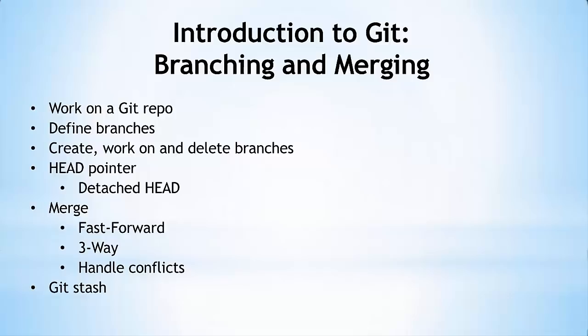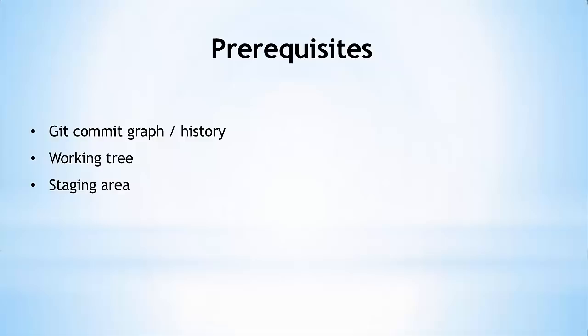Hello, I'm David Mahler and this is an introduction to Git branching and merging. In this video we will set up a new Git repo, define Git branches, create, work on and delete branches, understand the purpose of the head pointer and the meaning of a detached head, merge branches using both fast-forward and three-way merges, create and resolve a merge conflict, and work with Git stash. As a prerequisite, I recommend my introduction to Git core topics video.